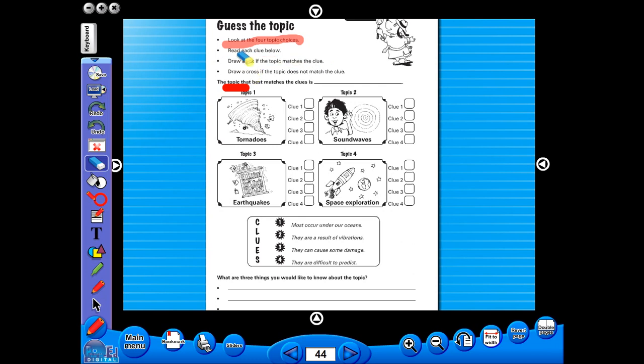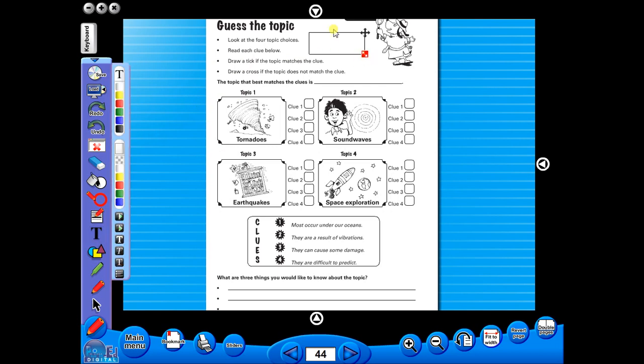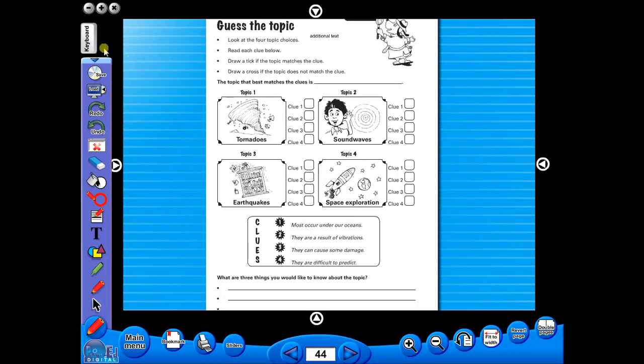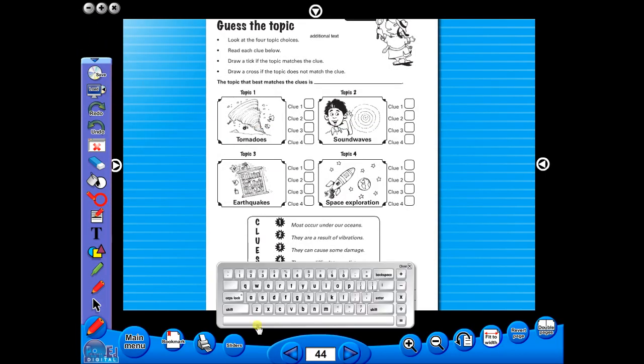Insert a text box to add an additional question or a hint to the worksheet for the pupils. To save your edited worksheet, just click on the save icon. In the top corner of the screen, you will see a keyboard icon. This enables the pupils to enter text on the worksheet.